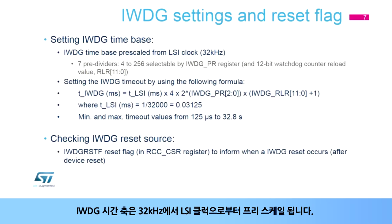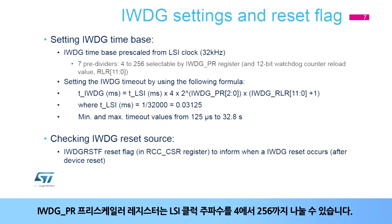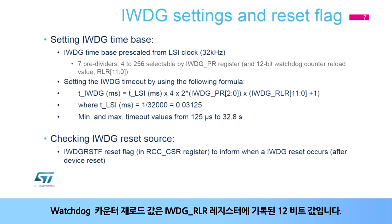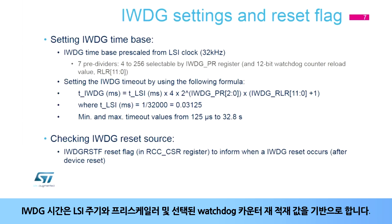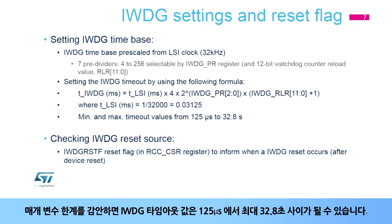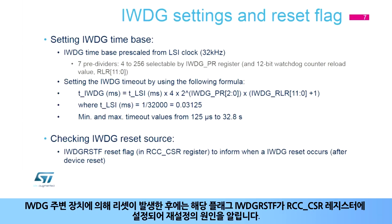The IWDG time base is pre-scaled from the LSI clock at 32 kHz. The IWDG PR pre-scaler register can divide the LSI clock frequency by 4 up to 256. The watchdog counter reload value is a 12-bit value written in the IWDG RLR register. A formula can be used to determine the IWDG timeout, based on the LSI period, its pre-scaler, and the selected watchdog counter reload value. Given the parameter limits, the IWDG timeout value can range from 125 microseconds up to 32.8 seconds.